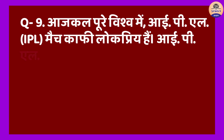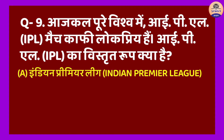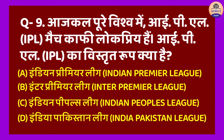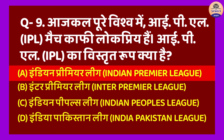Question No. 9: Aajkal poore vishwa mein IPL match kaafi log pasand karte hain. IPL ka vistrit roop kya hai? A. Indian Premier League, B. Inter Premier League, C. Indian Peoples League, D. India Pakistan League. Sahi jawab hoga Option A. IPL ka vistrit roop Indian Premier League hai. Ye cricket match 20-20 overs ka hota hai. Iske pahle commissioner Lalit Modi the. Vartaman mein iske commissioner Sansadiya Karyamantri Rajeev Shukla hain.